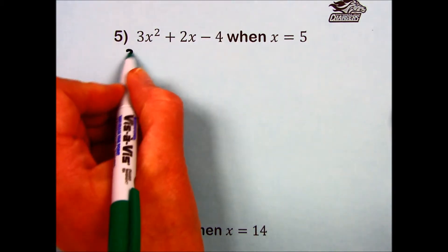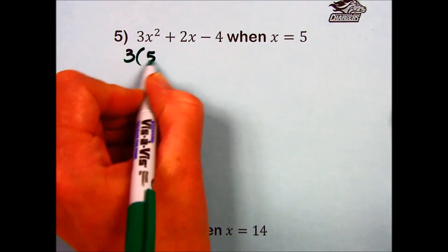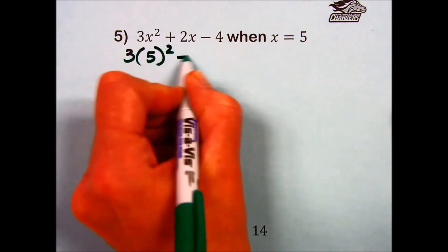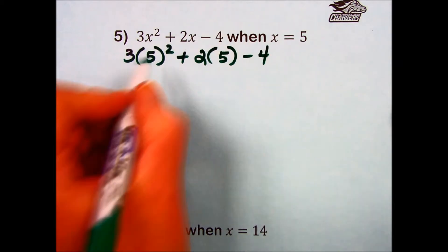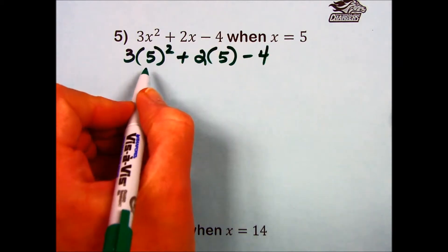So let's start this one. Everywhere there's the variable, in this case x, I'm replacing it with the value that they've given us, which is 5. The game plan is priority on the order of operations.